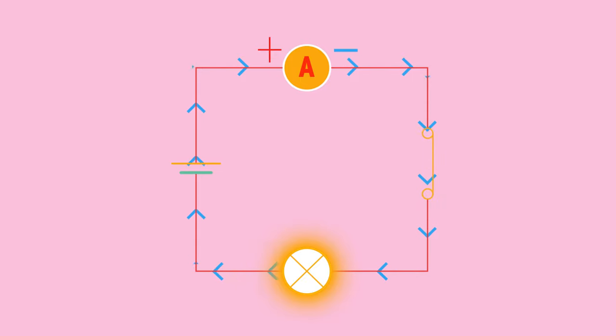The circuit must have no breaks in it to be complete. If there are breaks, no current can flow. In fact, that's how a switch works. To switch an appliance off we create a break in the circuit to prevent the current from flowing. To switch an appliance on we close the switch which completes the circuit and allows the current to flow.